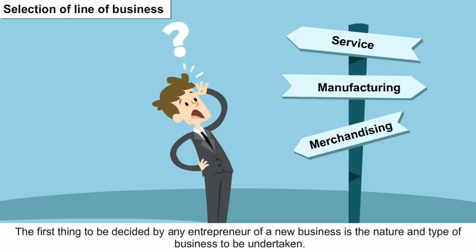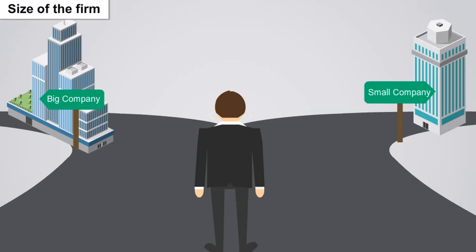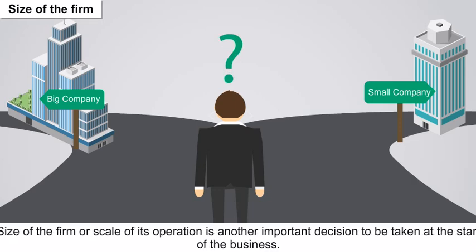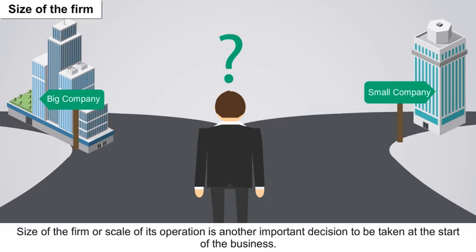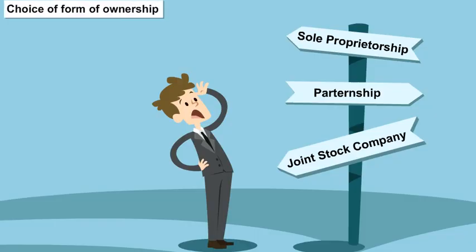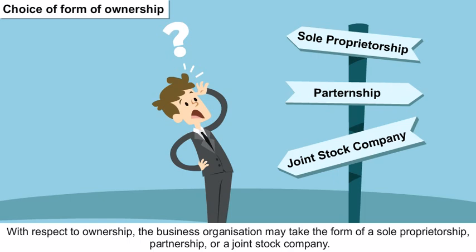Selection of line of business: the first thing to be decided by an entrepreneur of any new business is the nature and type of business to be undertaken. Size of the firm: the scale of operations is another important decision to be taken at the start. Choice of form of ownership: the business organization may take the form of a sole proprietorship, partnership or a joint stock company.